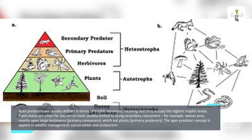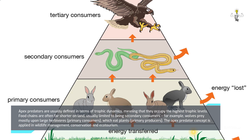Apex predators occupy the highest trophic levels. Food chains are often far shorter on land, usually limited to being secondary consumers. For example, wolves prey mostly upon large herbivores — primary consumers which eat plants, the primary producers. The apex predator concept is applied in wildlife management, conservation, and ecotourism.